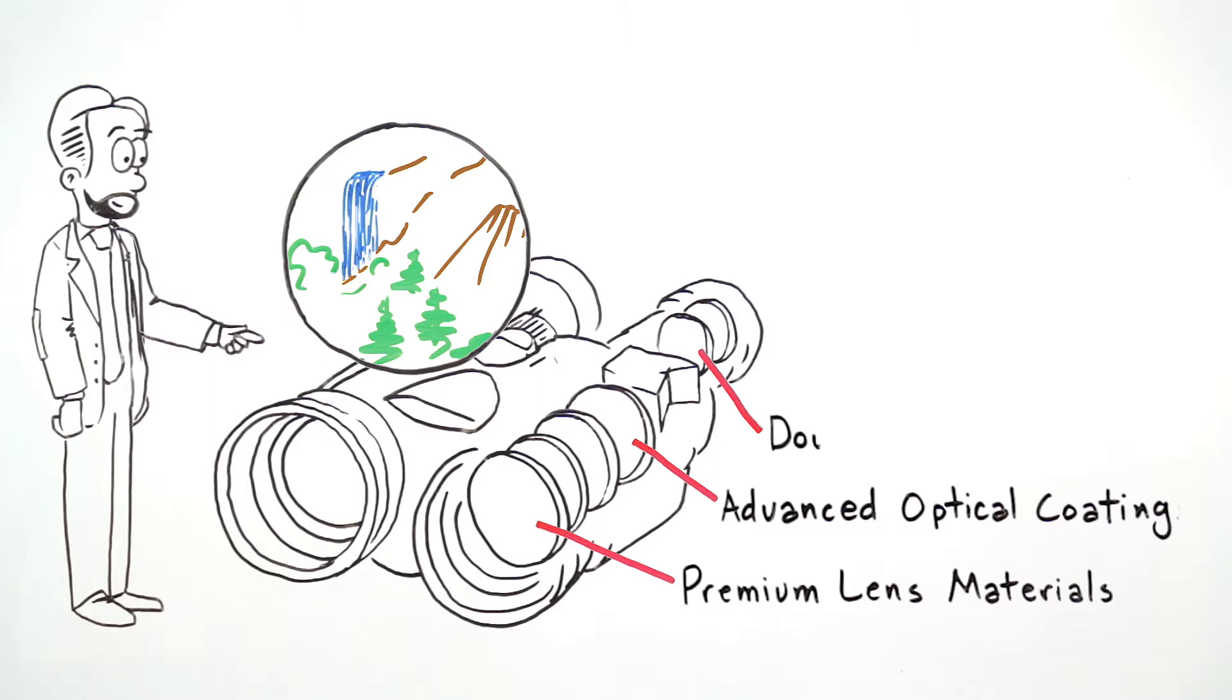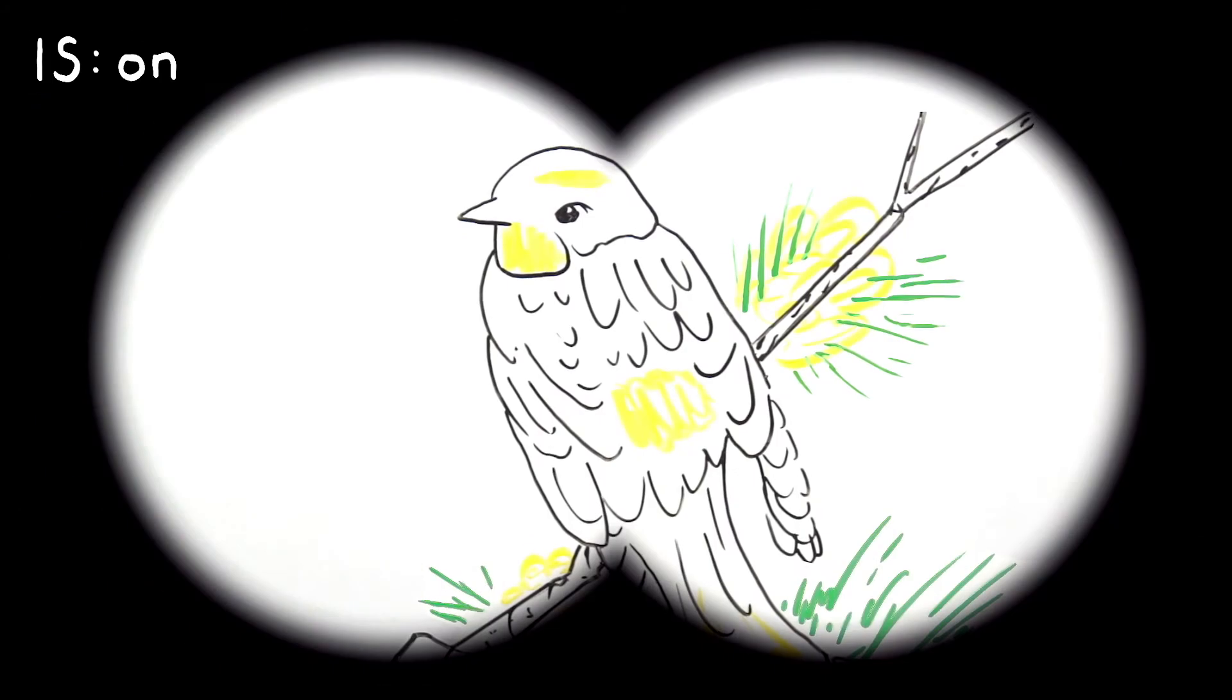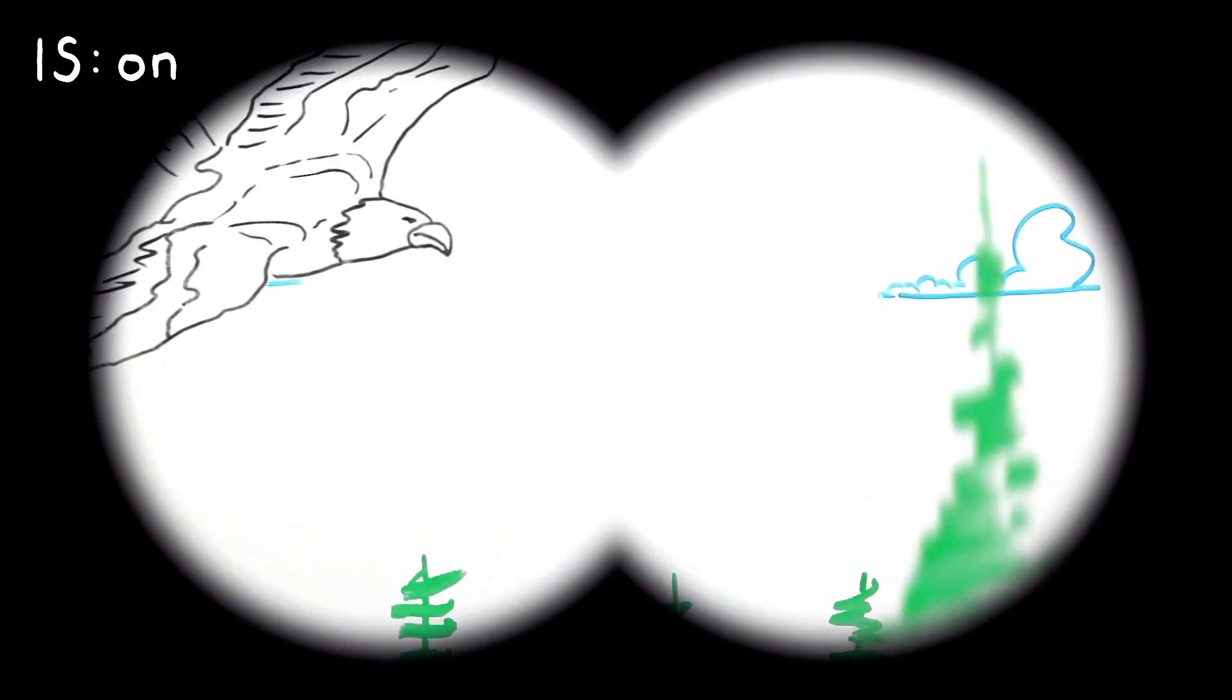In addition, Canon's doublet field flattener lens elements minimize blurred edges. Just soak in that pristine, wide field of view.